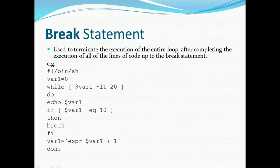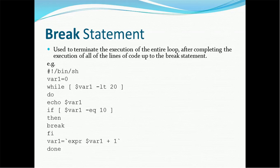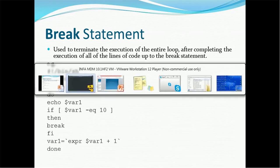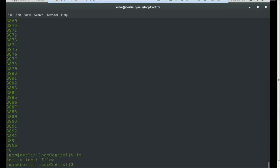Here is the example: we have defined variable one with value zero, while variable is less than 20, do echo variable one. If variable one equals 10, then break. After the if block ends, we are increasing variable by one. So even though we defined the while condition with less than 20, we are breaking after checking equal to 10. That means this program should print values zero to ten, and after that the code should exit. That is our expectation.